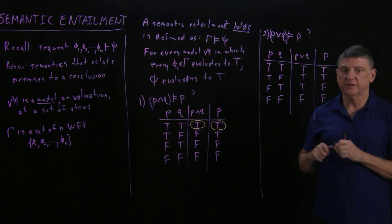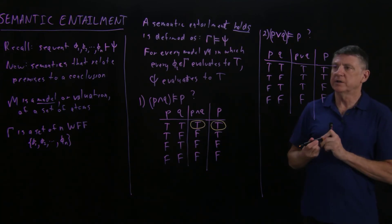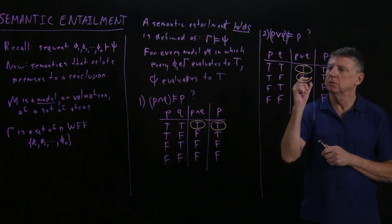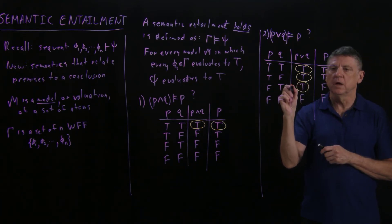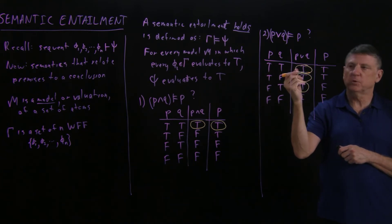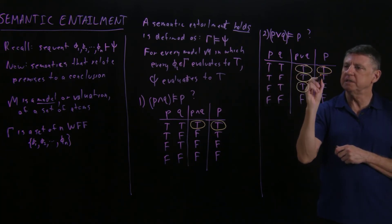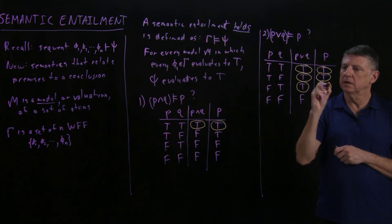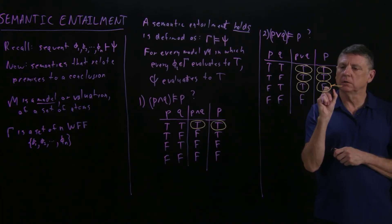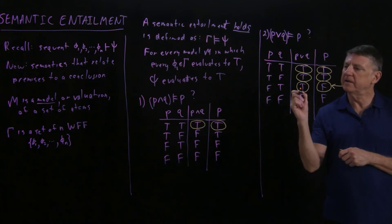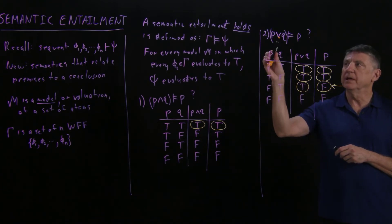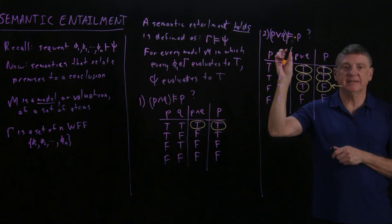We then look at each model — each valuation — in which this premise is true: rows one, two, and three (T, T, T). We look at the corresponding model for the supposed conclusion, which is T, T, F. Our problem here is that for this third model we have the premise is true and the supposed conclusion is false. So in this case we know that P or Q does not semantically entail P.